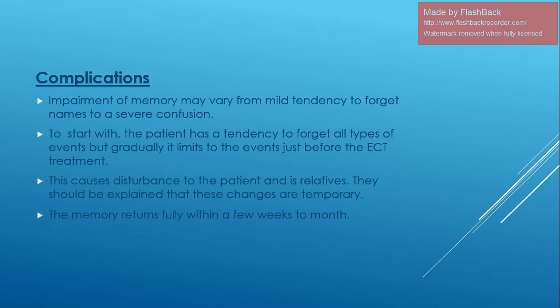Complications: Impairment of memory may vary from mild tendency to forget names to severe confusion. Initially the patient has a tendency to forget all types of events, but gradually this is limited to events just before the ECT treatment. This causes disturbance for the patient and relatives. They should be explained that these changes are temporary and memory returns fully within a few weeks to months.